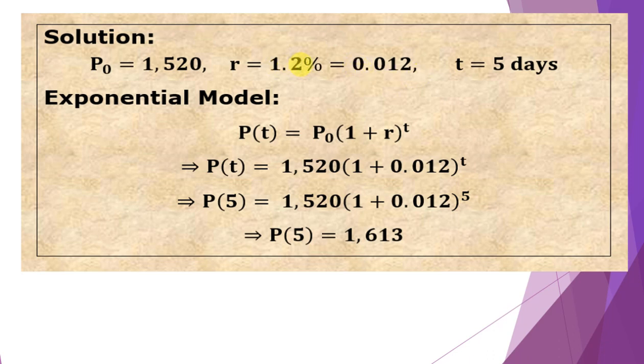How to do it in your calculator: you just press 1.2, divide it by 100. It will give you this value. Then for T is in days, and we have 5 days. We are asked to find the number of infected people after 5 days.